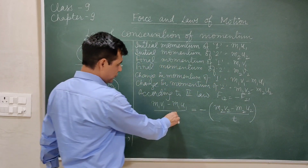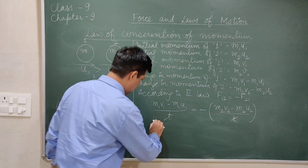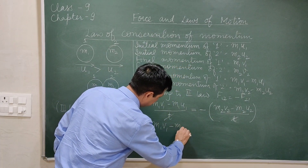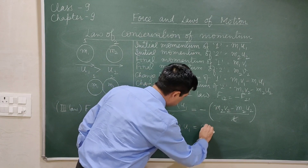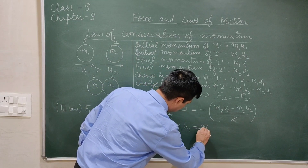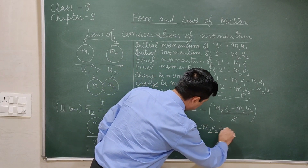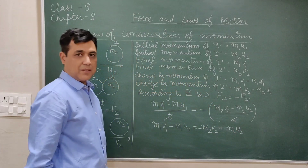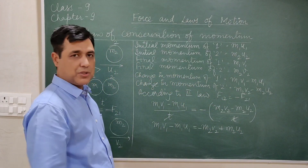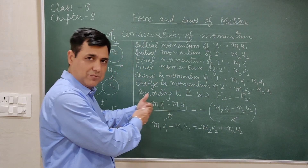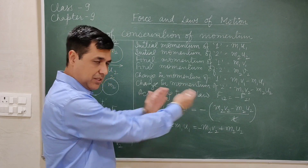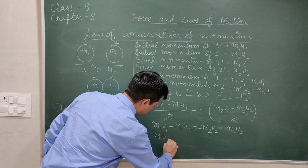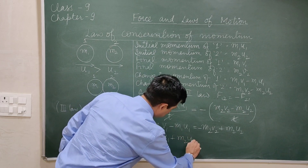So M1 V1 minus M1 U1 is equal to minus M2 V2 plus M2 U2. Rearranging so that initial momentum terms are on one side and final momentum terms are on the other side: M1 U1 plus M2 U2 is equal to M1 V1 plus M2 V2.